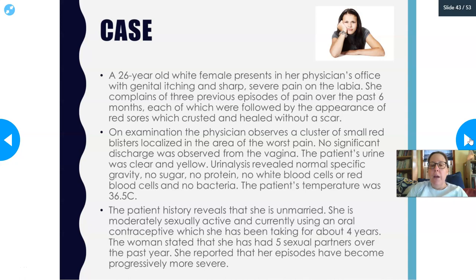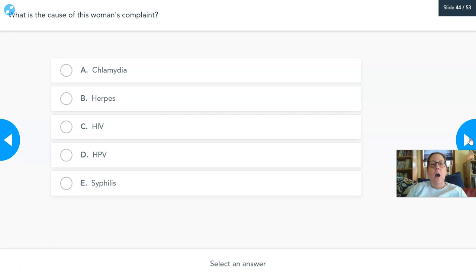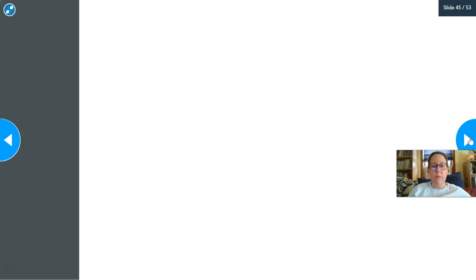No significant vaginal discharge was observed. Urinalysis was completely normal — normal specific gravity, no sugar, protein, white cells, red cells, or bacteria. Temperature was 36.5°C — normal. Patient history: unmarried, moderately sexually active, on an oral contraceptive for four years, five sexual partners over the past year, and episodes becoming progressively more severe. Poll: Is this chlamydia, herpes, HIV, HPV, or syphilis? Note that some of those are bacterial.